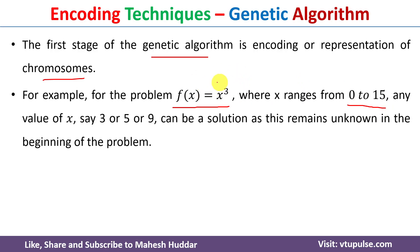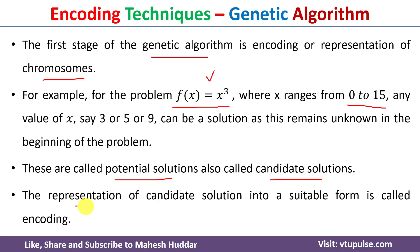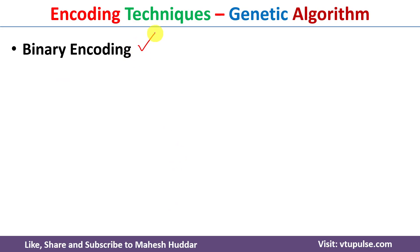The solution for this function can be anything in the range of 0 to 15. Those are known as the potential solutions or the candidate solutions. Before we apply the genetic algorithm, we need to represent these solutions in one of the forms. That representation of candidate solution is known as the encoding technique in genetic algorithm.